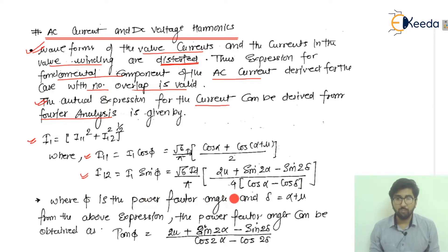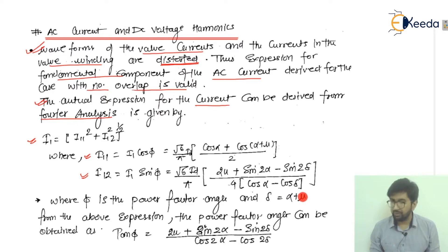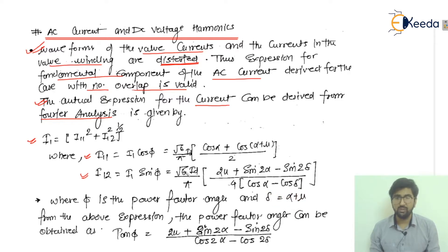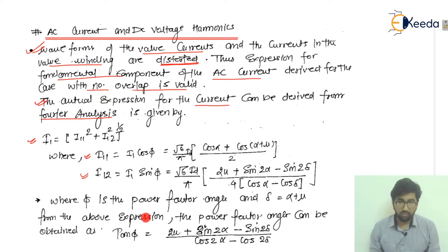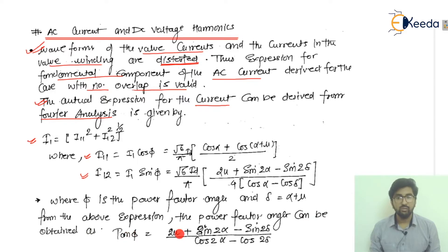Here α is the firing angle and μ is the overlapping angle, so δ = α + μ. From the above expressions, the power factor angle can be obtained by: tanφ = [2μ + sin2α − sin2δ] / [cos2α − cos2δ]. Please remember these formulas as they are important for semester exams.